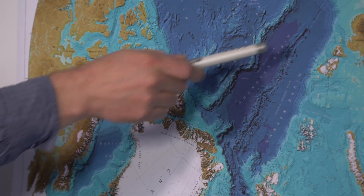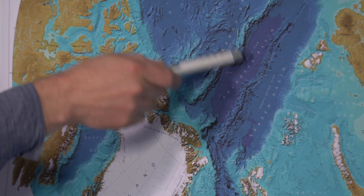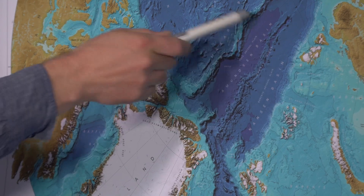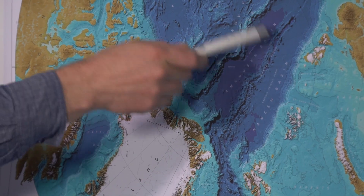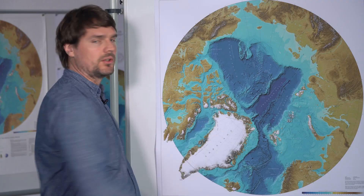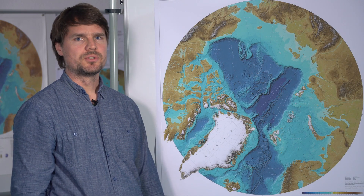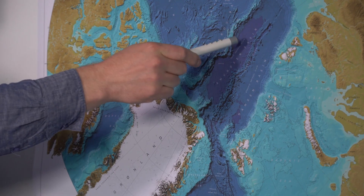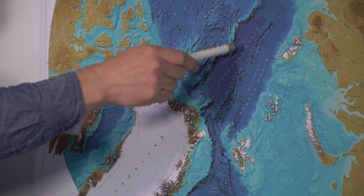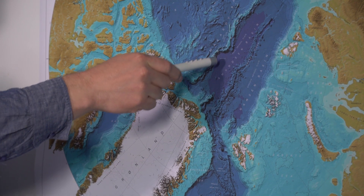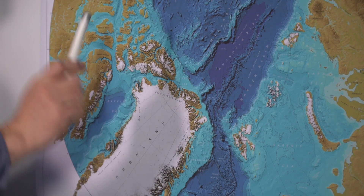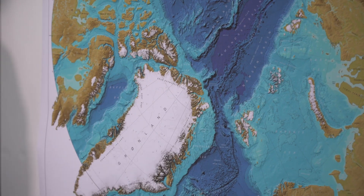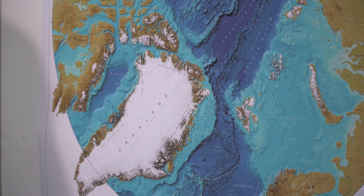The Mosaic drift has actually started already in the central region of the Arctic Ocean, in the deep part of the ocean. It's going to drift for a whole year near the North Pole and then towards the Fram Strait near Spitsbergen.